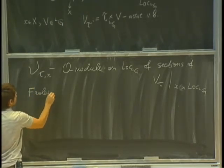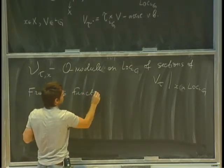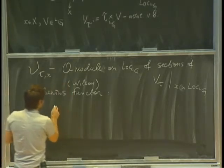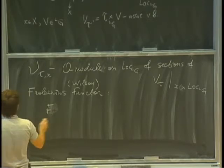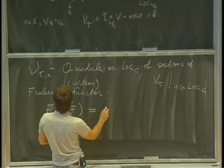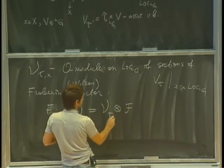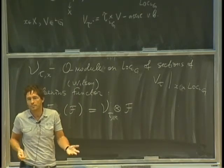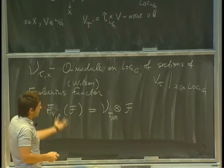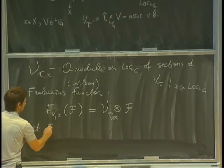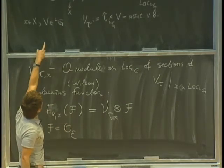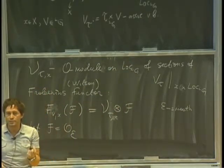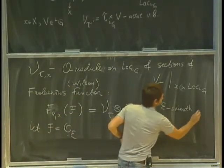The Frobenius functor F_{V,x} applied to an O-module F is simply the tensor product of F with this vector bundle V_τ. It's very simple — you just multiply by the vector bundle, more precisely the sheaf of sections. For example, suppose F is a skyscraper sheaf at a smooth point E of loc LG. When you multiply a skyscraper sheaf by a vector bundle, you effectively multiply by the fiber of that vector bundle at the point, since it's zero everywhere else.